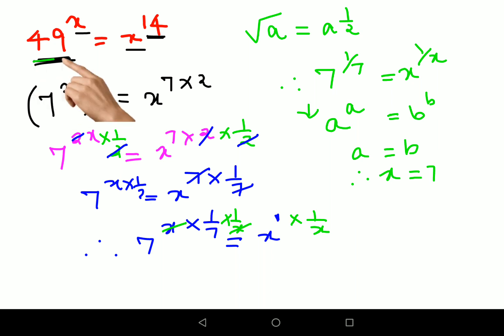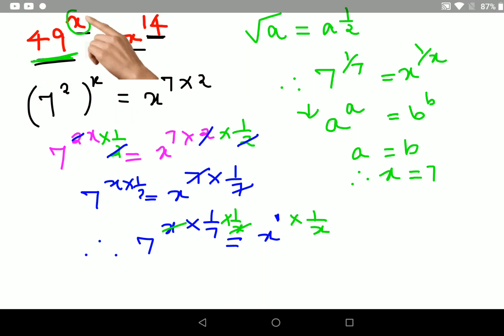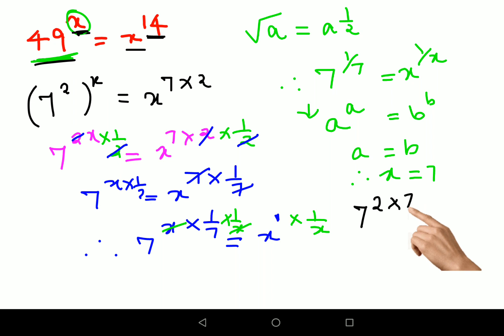Now if you want, you can just cross verify this. Let's put value of 7 over here. So we have 49, or let me write it as 7 raised to 2, right, 7 square into 49, that is into x, that is 7 over here. So this then comes out to be 7 raised to 14. Let's put the value of x on your RHS. So this then becomes instead of x we will get 7 raised to 14, and that is equal to your LHS.